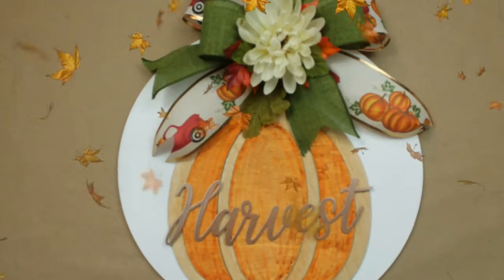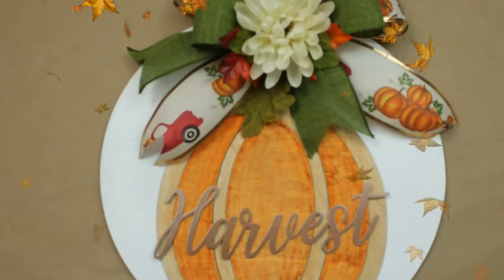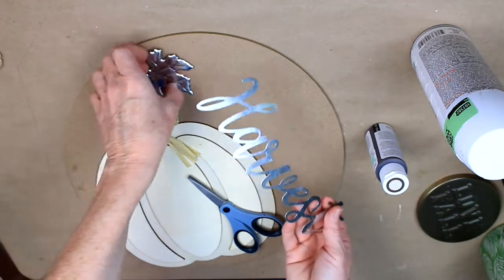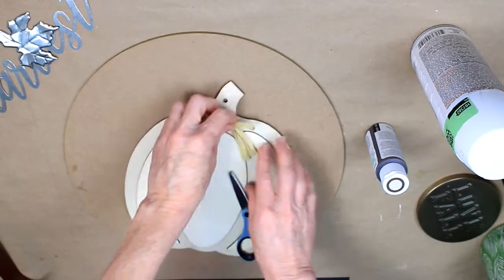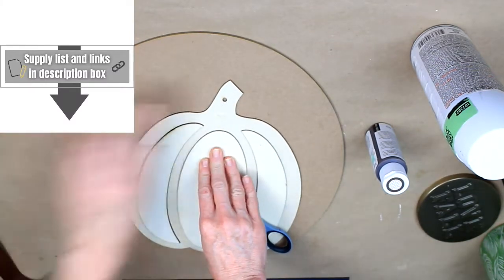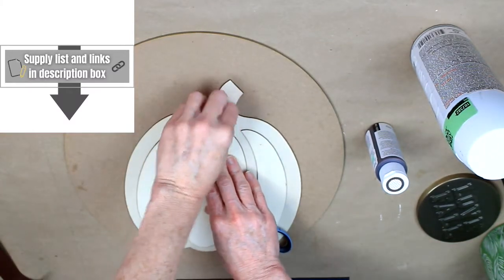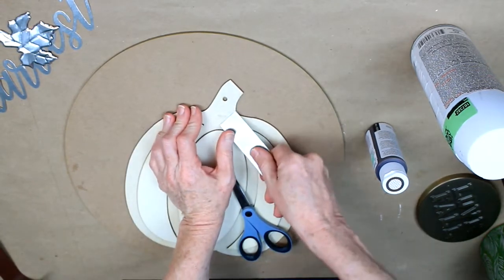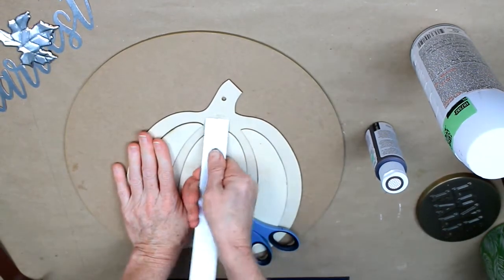Let's make some beautiful fall decor with Dollar Tree and thrifted items. We have some items here that we put together. First we're going to take this little pumpkin with the 3D layering and pull off the little bow that was on there. It's a little raffia bow.